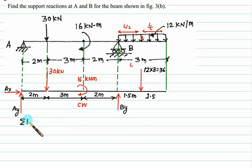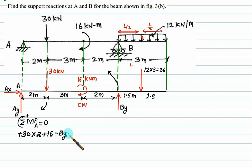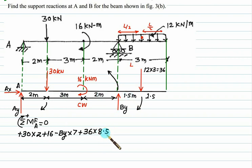To find reactions, take the sum of moments of all forces about fixed point A with clockwise positive equal to zero. Moments of Ax and Ay about A are zero. Moment of 30 kilonewton is clockwise: plus 30 multiplied by 2. The couple is clockwise: plus 16. Moment of By is anticlockwise: minus By multiplied by 7 (distance 2 plus 3 plus 2). Moment of 36 kilonewton is clockwise: plus 36 multiplied by 8.5 (distance 7 plus 1.5). Solving this equation gives By equal to 54.57 kilonewton.